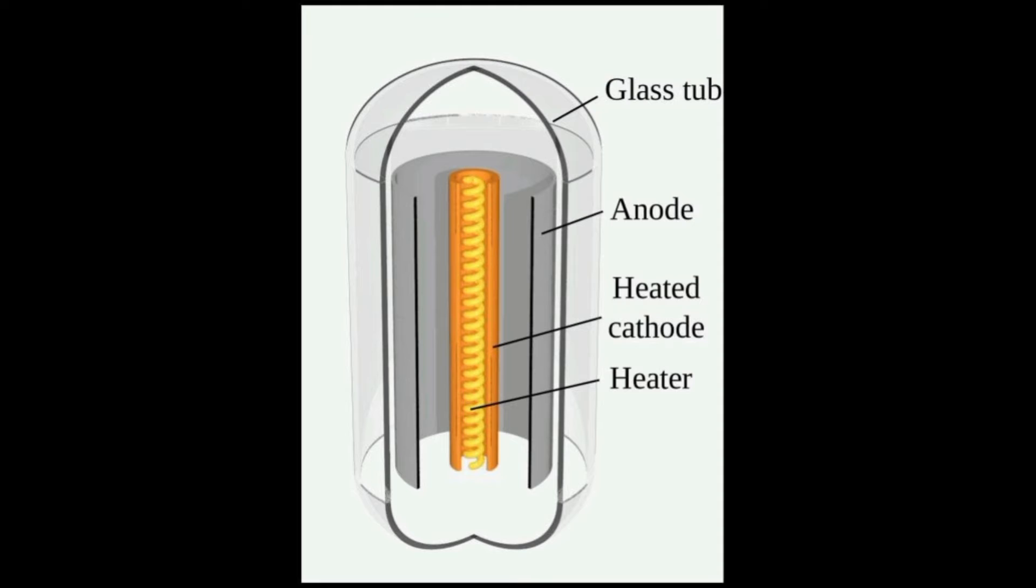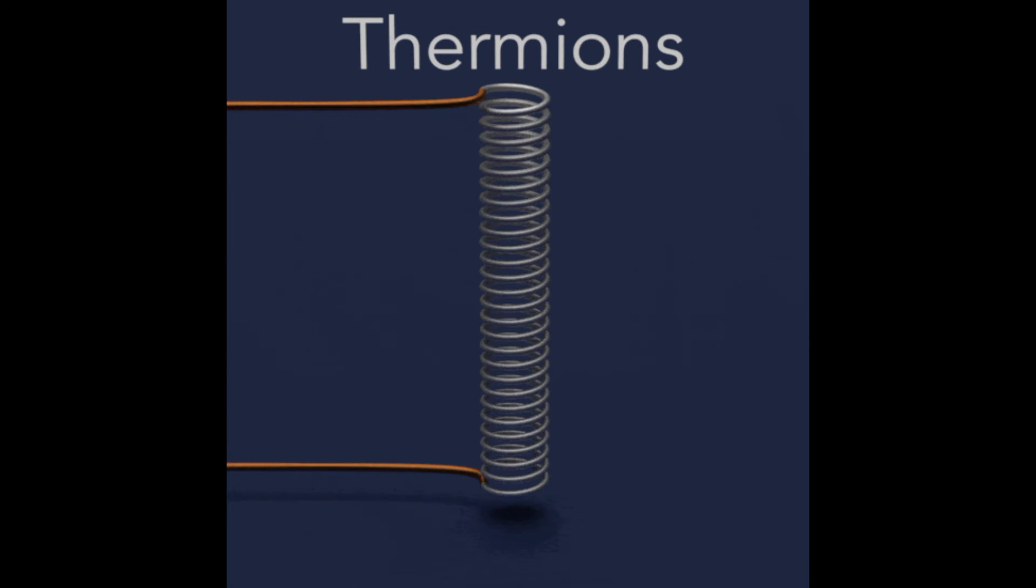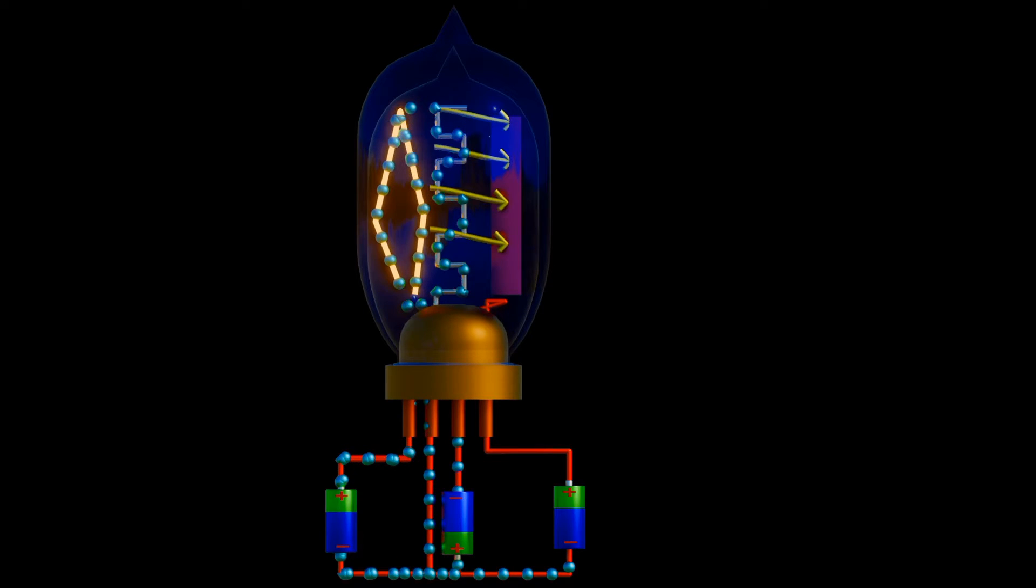Cathode is the electrode from which the electrons originated. To cause it to give electrons, its temperature is raised with a heater. In some tubes, the heater is the cathode, but for the tubes used in the logic of the ENIAC, the heater is.